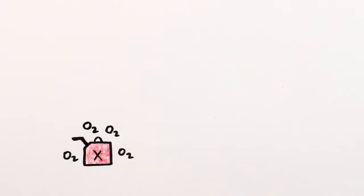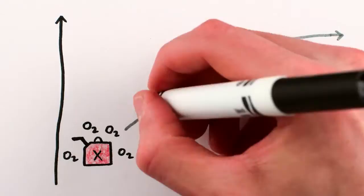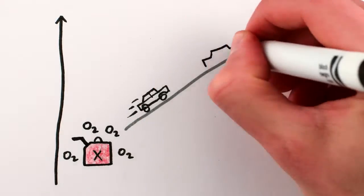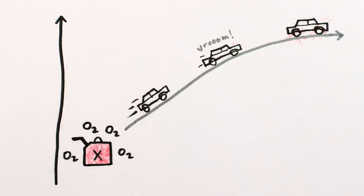For example, gasoline and air carry useful low-entropy energy. By burning them together, we can accelerate a car, drive for a while, then put on the brakes and stop.